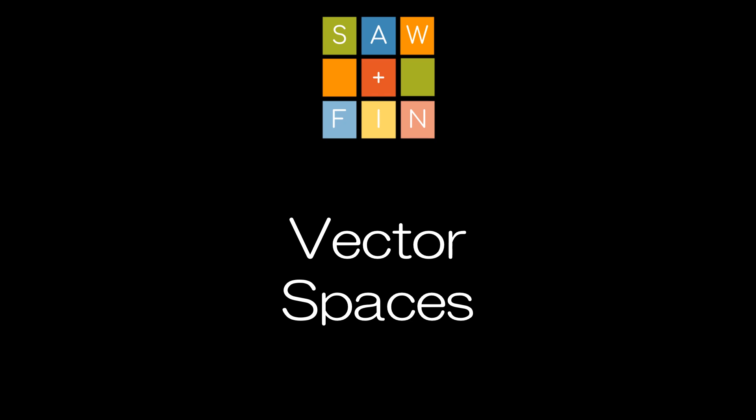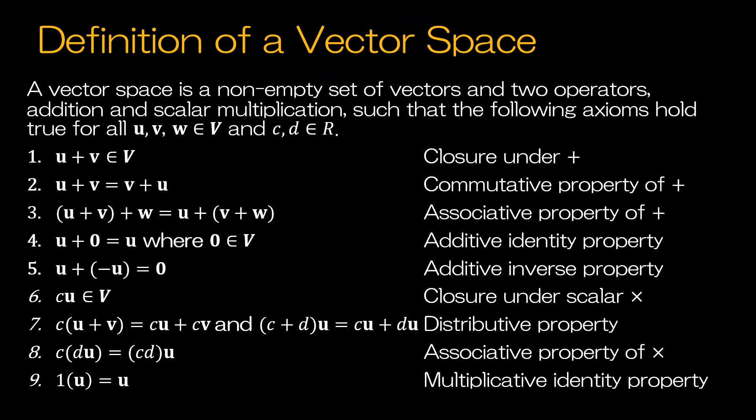Vector spaces. First, let's talk about the definition of a vector space. A vector space is a non-empty set of vectors and two operators, which are addition and scalar multiplication, such that the following axioms hold true for all vectors in V, which is the vector space, and for C and D, which are scalars — real numbers.